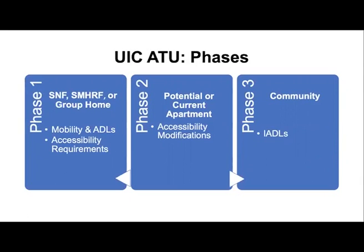For Colbert members, the UIC Assistive Technology Unit manages $5,000 across all three phases. For Williams members, the assistive technology unit is managing $1,000 across all three phases per class member. This funding — $5,000 for Colbert or $1,000 for Williams — can be used for environmental modifications or any other non-standard DME or low-cost equipment.